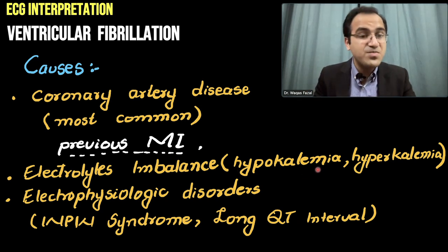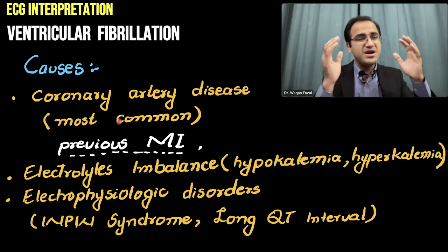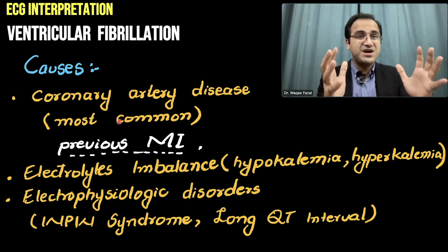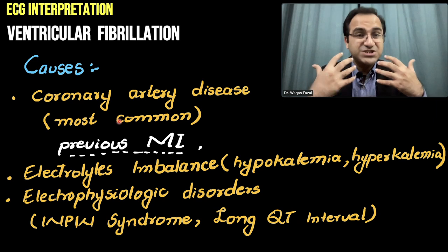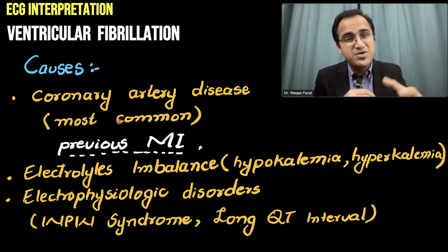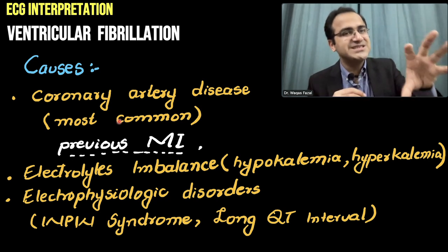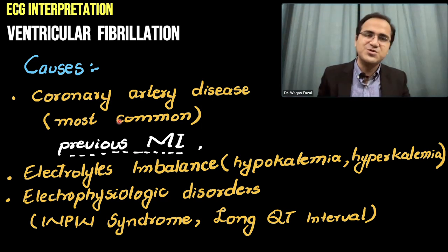Other causes include electrolyte imbalances such as hypokalemia and hyperkalemia, electrophysiologic disorders, Wolff-Parkinson-White syndrome, and long QT interval. The most common cause is heart damage — previous MI, myocarditis, congestive heart failure. Heart failure patients have a damaged heart that may be hypertrophied or have other abnormalities. Whenever there is any change from normal tissue, there is a change in electrical activity and a risk of developing ventricular fibrillation.